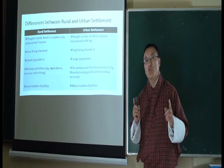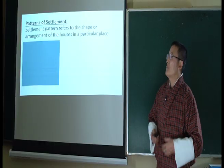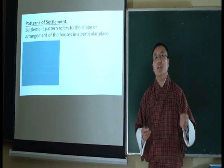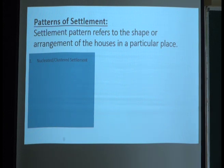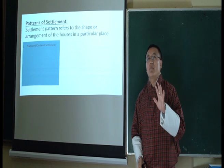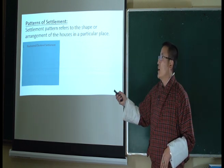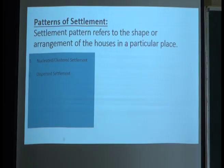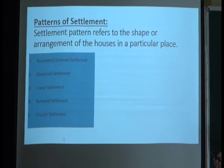Now let us look at the patterns of settlement. Just as we have different patterns printed on our ko and kira, settlements also have different patterns. There are five main patterns: first, nucleated or clustered settlement; second, dispersed settlement; third, linear settlement; fourth, terrace settlement; and fifth, circular settlement. For class seven and eight, we will be focusing on these five prominent patterns.